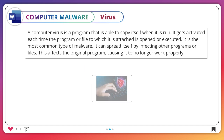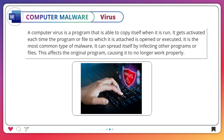Virus. A computer virus is a program that is able to copy itself when it is run. It gets activated each time the program or file to which it is attached is opened or executed. It is the most common type of malware. It can spread itself by infecting other programs or files, affecting the original program and causing it to no longer work properly.